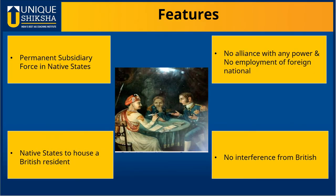Let's see what these terms and conditions were. As per the agreement, the Indian native state would disband its own army and British troops would be stationed permanently in the Indian ruler's territory. These troops would be maintained by the native state by paying them in cash or kind, or by ceding a part of the ruler's territory. It was also compulsory for the Indian ruler to house a British resident in his court.